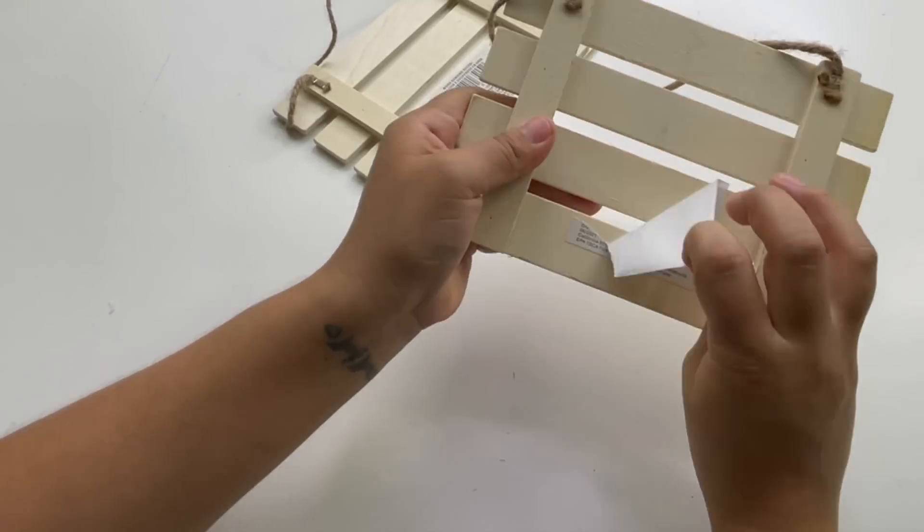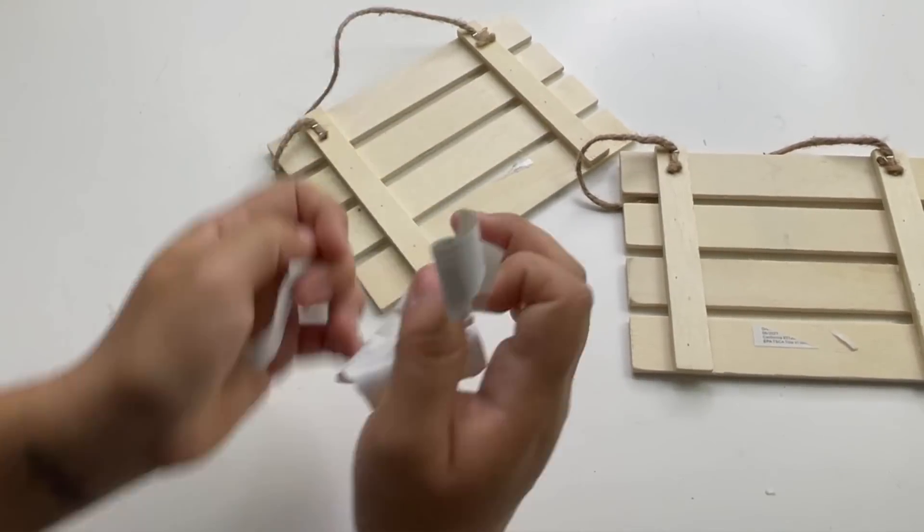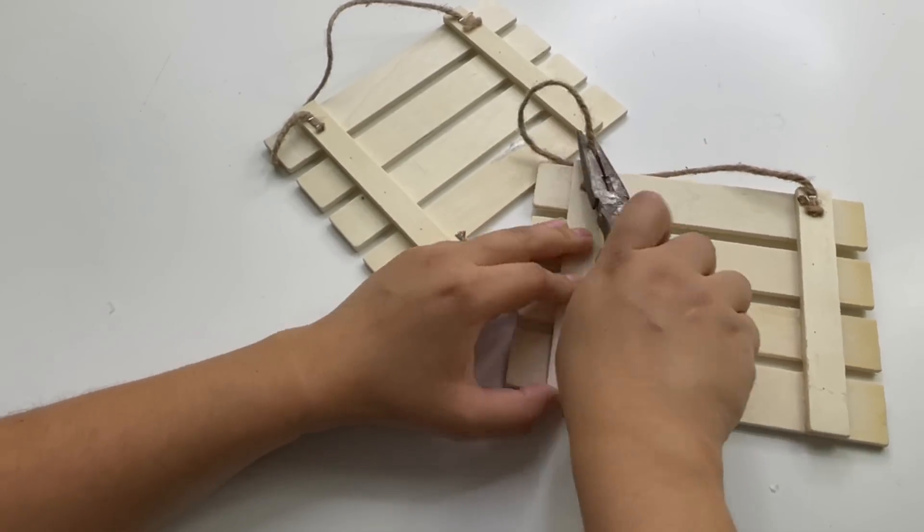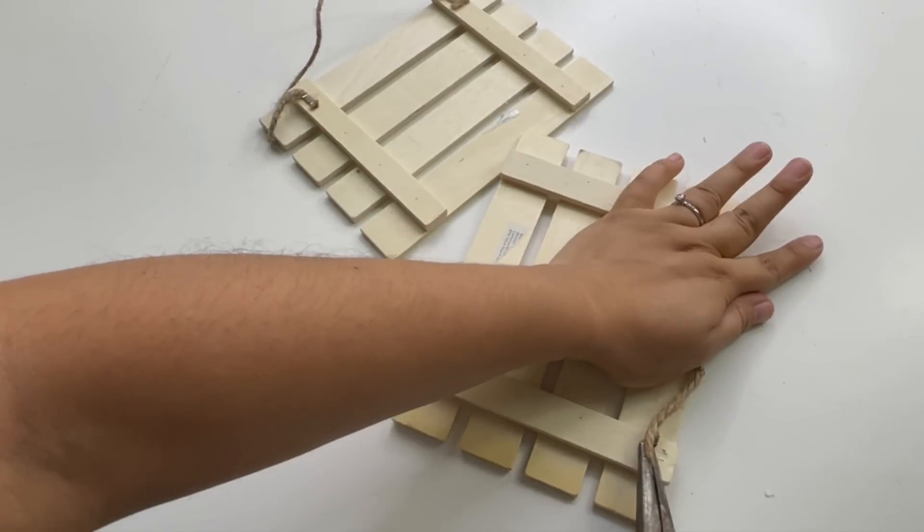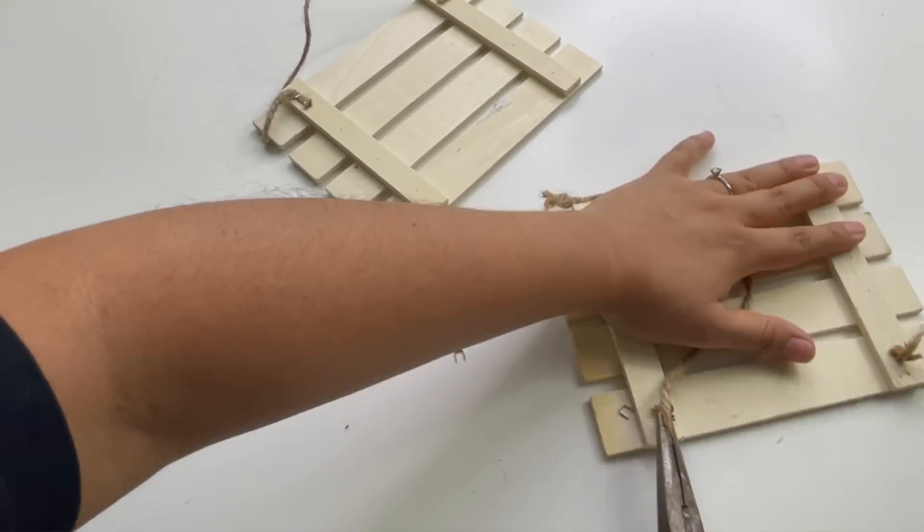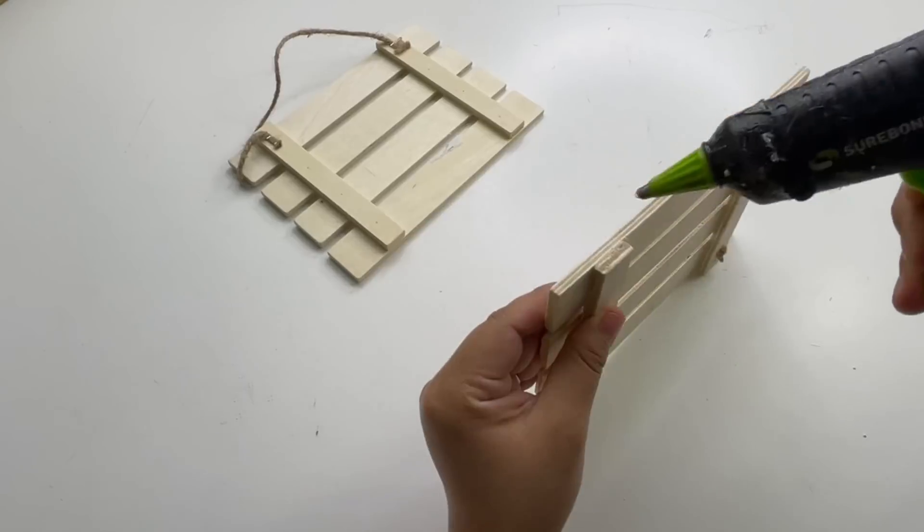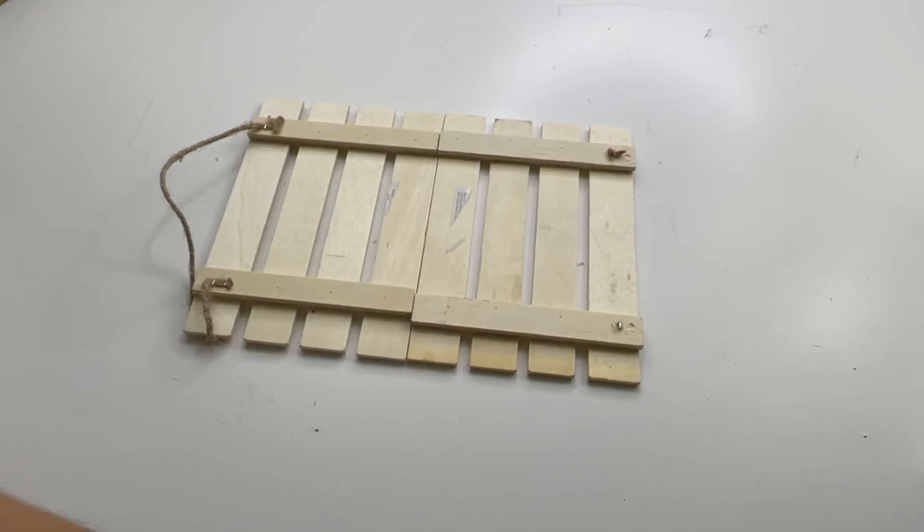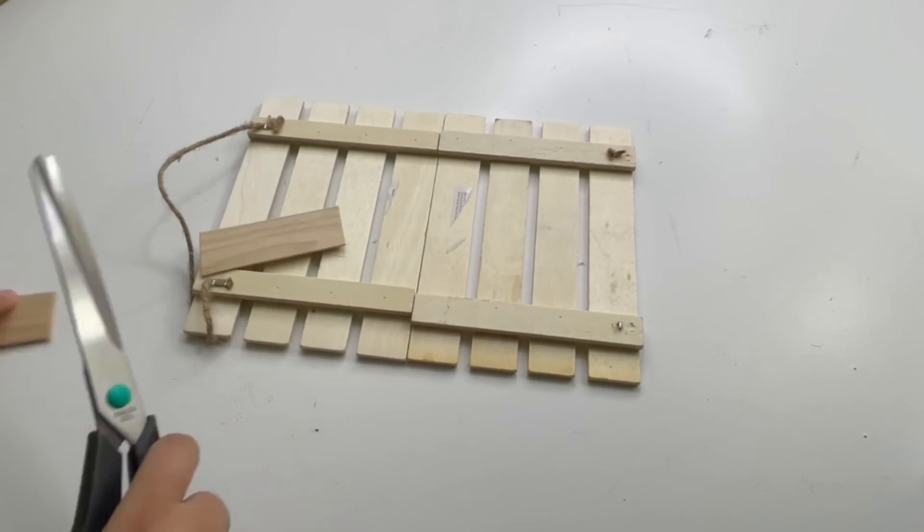For my next project I will be using two of these Dollar Tree wood pallets. So I'm going to make like two in one, so you can either make like a wall decor or make a little tray. So I'm going to start by removing the strings from one of them. Now if you want to make a tray with this, then you can leave the string on. Then I will be gluing these together using hot glue. To make this more sturdy, I will be adding a popsicle stick in the center.